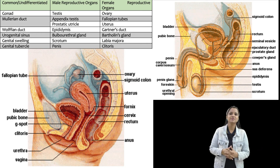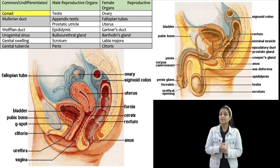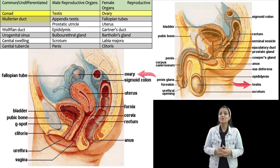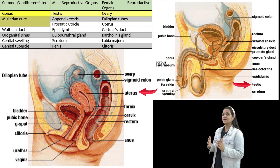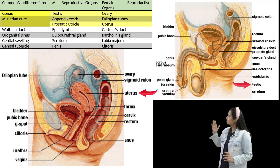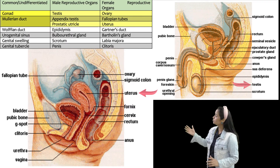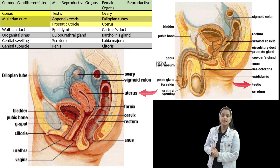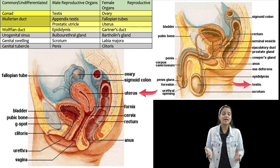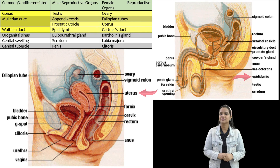Let's start with the first one: the gonad. In the case of the male, that is known as the testis, and in the case of the female, it is known as the ovary, because of their different structures. The second is the Mullerian duct, which is known as the appendix testis and prostatic utricle in the case of the male, and in the case of the female, that is the fallopian tube and uterus. The third is the Wolffian duct, known as the epididymis in the case of the male, and in the case of the female, that is Gartner's duct.